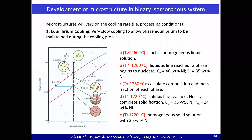Remember, yesterday we were referring to the isomorphous phase diagram of copper and nickel, and our concentration is 35 weight percent of nickel. Let us assume we have heated up this nickel-copper mixture to 1300 degrees centigrade. On the phase diagram, we begin our journey at this particular point — let us call it point A. From 1300 degrees centigrade, we are starting the cooling process.